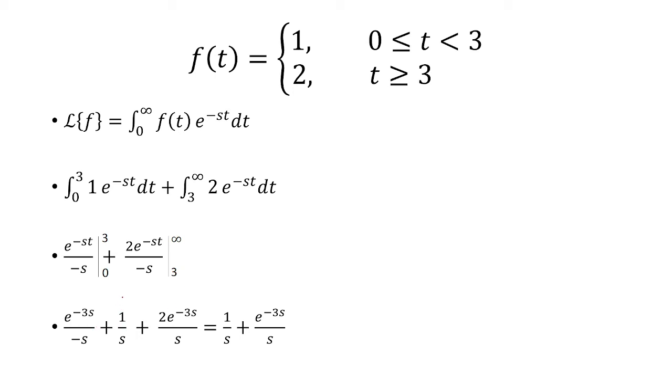So this part right here is when you plug in 3. This is when you plug in 0. As t goes to infinity, it goes to 0, and so this is when you plug in 3.